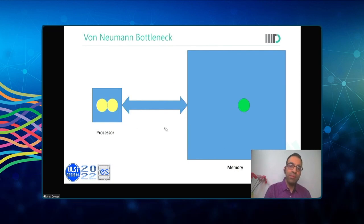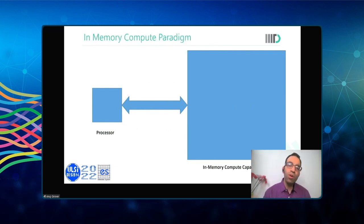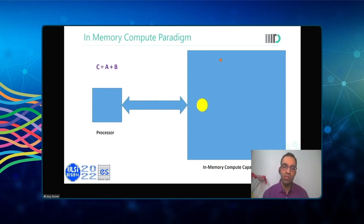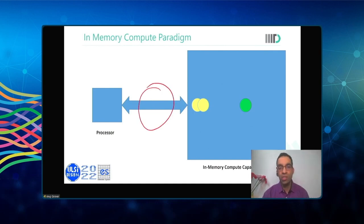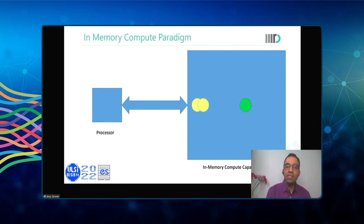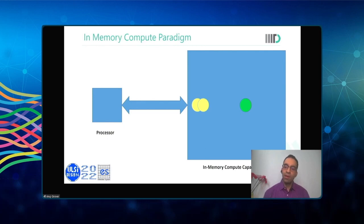The solution is in-memory compute. If the SRAM itself is in-memory compute capable, the processor simply sends the instruction 'C = A + B.' The memory accesses location A, accesses location B, generates output C, and automatically stores it at location C inside itself. The bus interaction reduces dramatically, overall throughput improves, and power wasted transmitting data to and from memory to processor is saved — a much more efficient memory system.